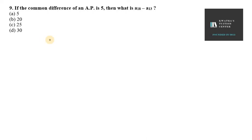Question number 9 says if the common difference of an AP is 5, that means d equals 5. Now we need to find a18 and a13. In this case we need to find the difference of them.